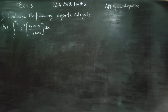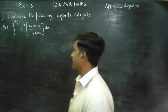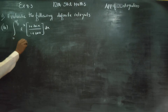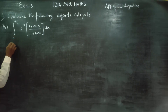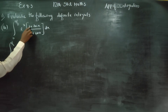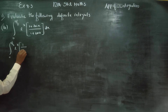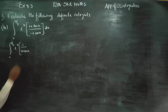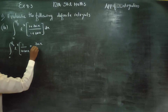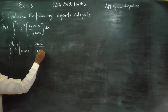Dear 12th standard students, in exercise number 9.3, evaluate the following definite integral: from 0 to π/2 of e^x times (1 + sinx)/(1 + cosx). This can be written as e^x times [1/(1 + cosx) + sinx/(1 + cosx)].